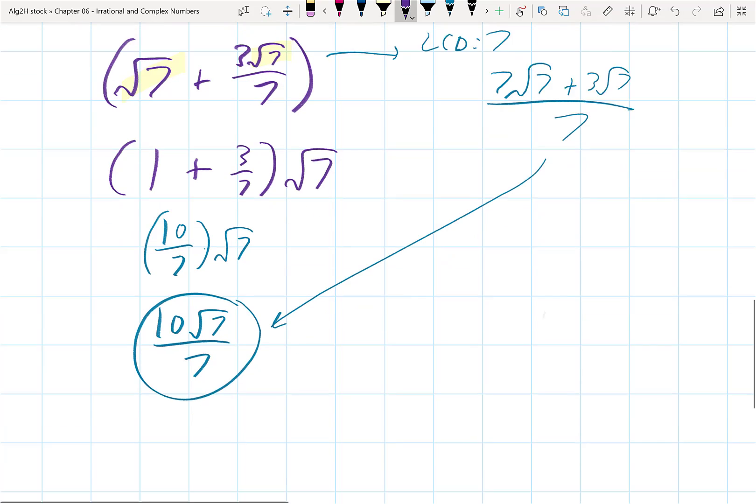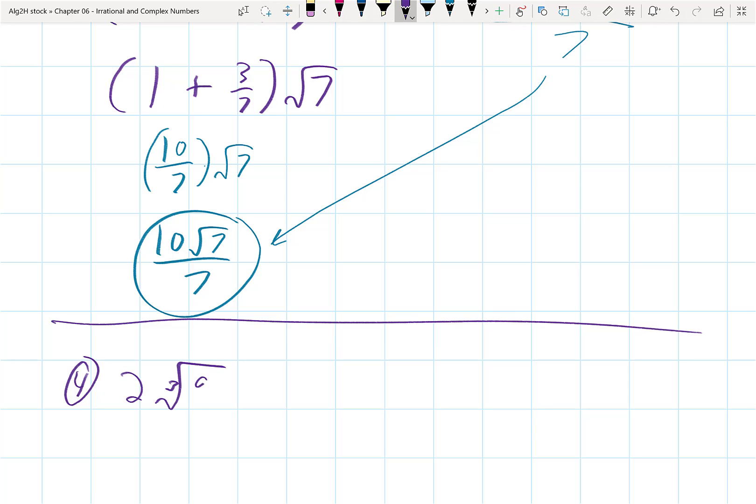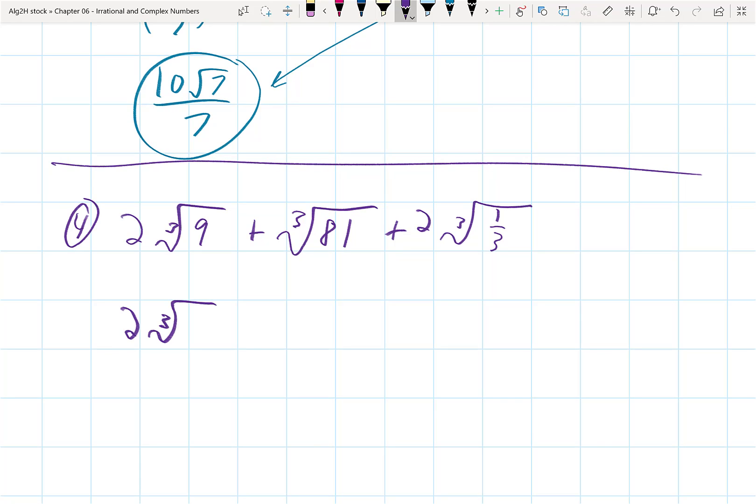So, continuing on, let's look at an example that is more cubed root. 2 cubed root of 9 plus cubed root of 81 plus 2 times the cubed root of 1 third. So, we need to try to simplify each of these parts. Well, 2 cubed root of 9 can't be simplified. The cubed root of 81, 81 is 27 times 3, and the cubed root of 27 is 3. Or, I can think of 81 as 3 to the 4th, and I'm taking a cubed root. So, I get 3 cubed root of 3 when I simplify that.